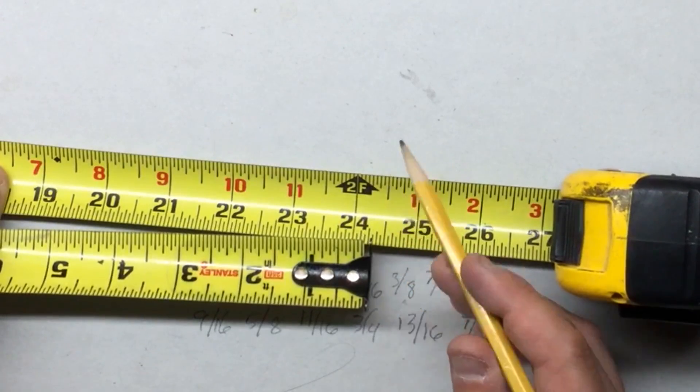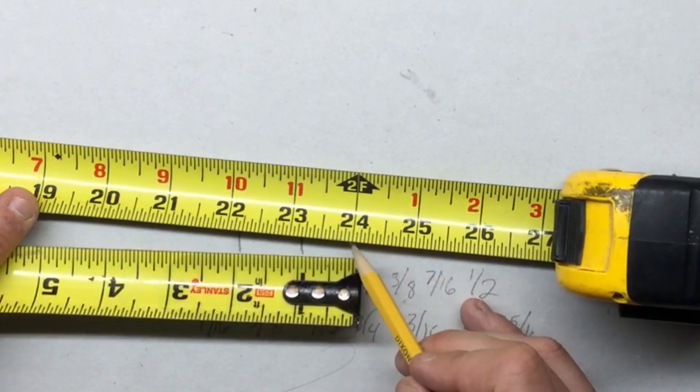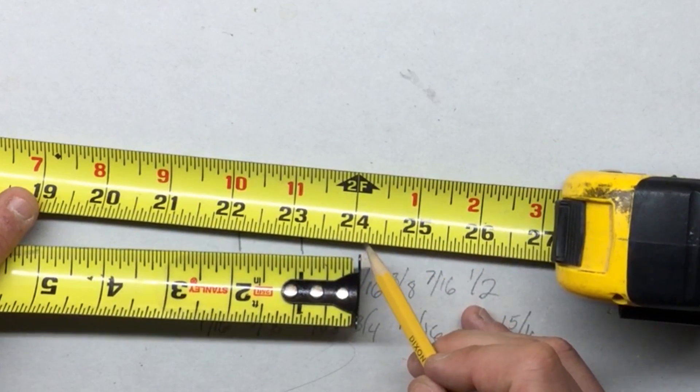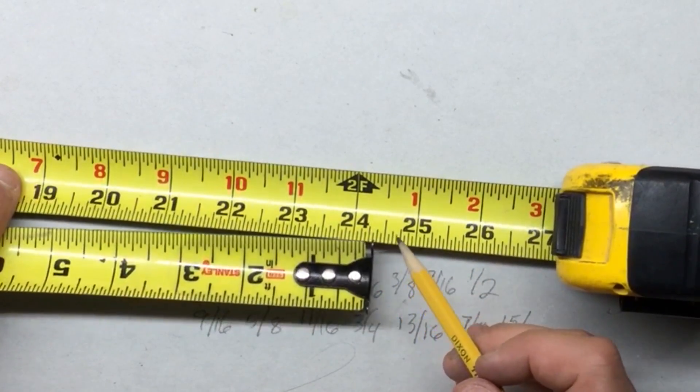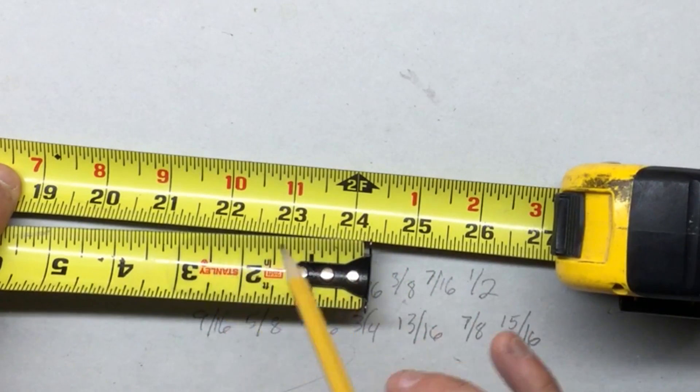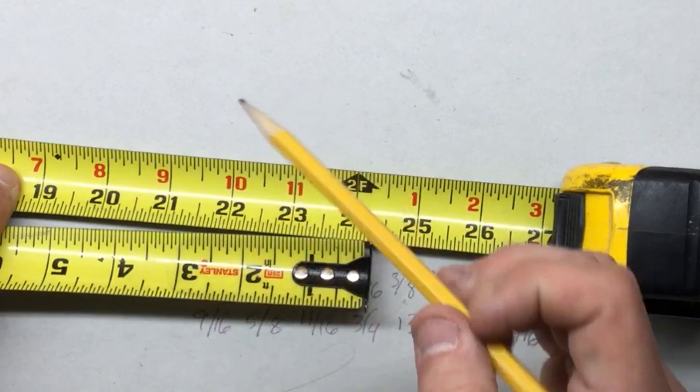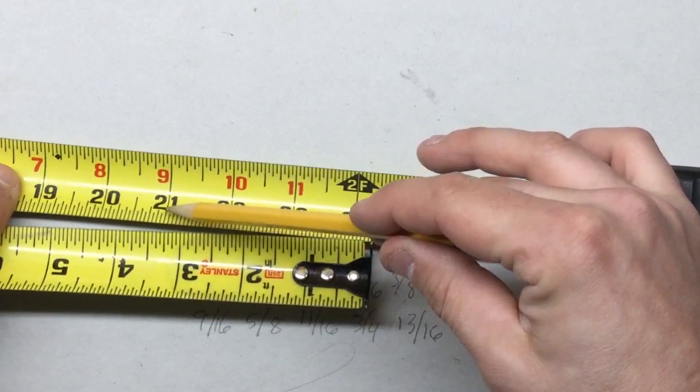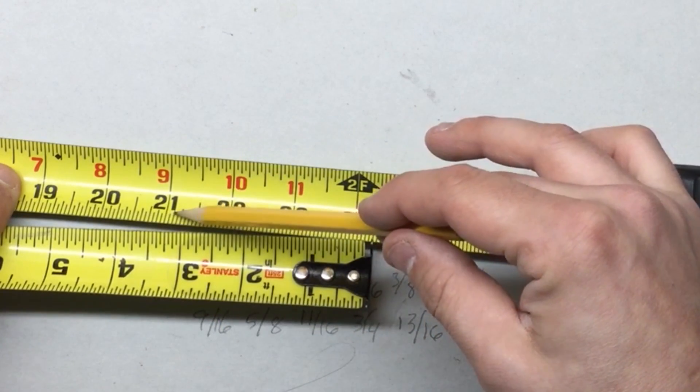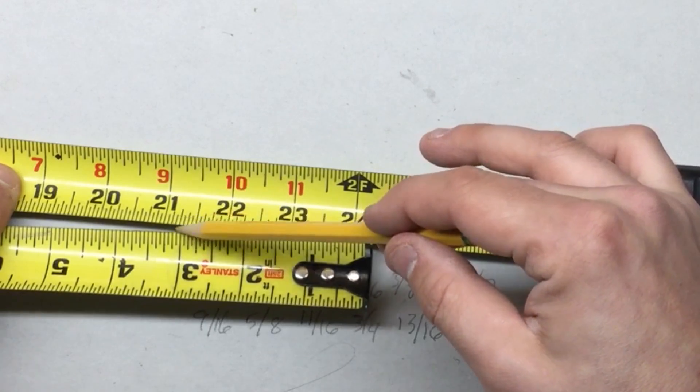But say you want to see what twenty-four and five sixteenths is, minus three and an eighth. You go to three and an eighth, and it looks like twenty-one and three sixteenths.